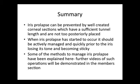In summary, iris prolapse can be prevented by well-created corneal sections which have a sufficient tunnel length and are not too posteriorly placed. When iris prolapse has started to occur, it should be actively managed quickly, prior to the iris losing its tone and becoming sticky — in which case the iris will consistently prolapse and become even more difficult to retain within the anterior chamber. Some of the methods to manage iris prolapse have been explained in this short lecture, with further videos demonstrating operative techniques available in the members section of this video teaching site.